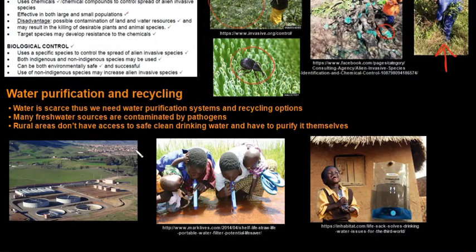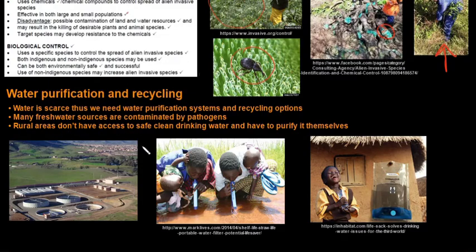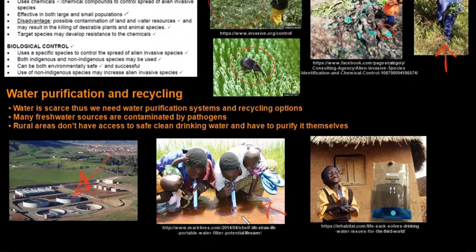Water purification and recycling are important because water is scarce and not always drinkable. Many freshwater sources are contaminated by pathogens that can cause cholera and diarrhea. Rural areas don't have access to clean drinking water or purification plants. Other methods are needed, such as filtration straws that filter water so people can drink straight from a river.